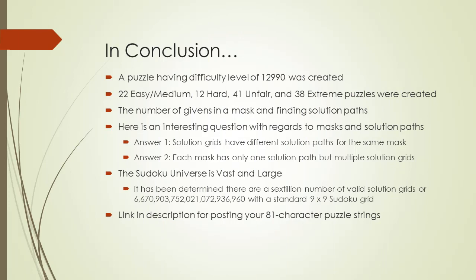So what have we done? A puzzle having a difficulty score of 12,990 was created. Over 100 puzzles were created using the add-back process defined in this video. And it was demonstrated that when you remove givens from a mask, it reduces the number of solution grids having a valid solution path. In preparation for this video, I worked hard trying to answer an interesting question: all the successful solutions to the masking examples shown had the same solution path and difficulty score. The question I was trying to answer is: can we have a mask where one solution grid creates a hard-level puzzle and another creates an extreme-level puzzle?